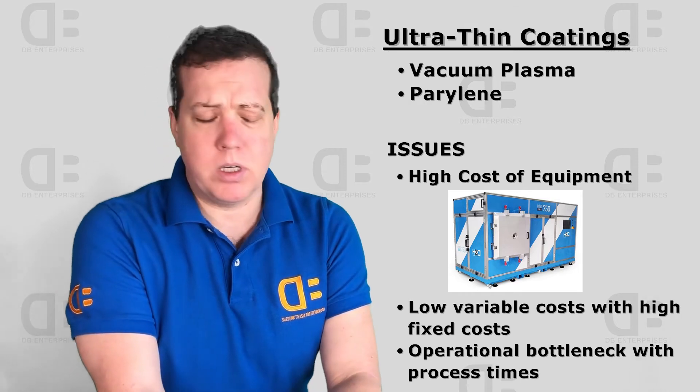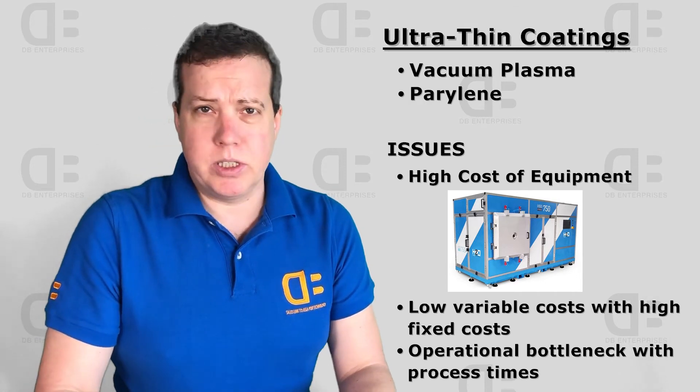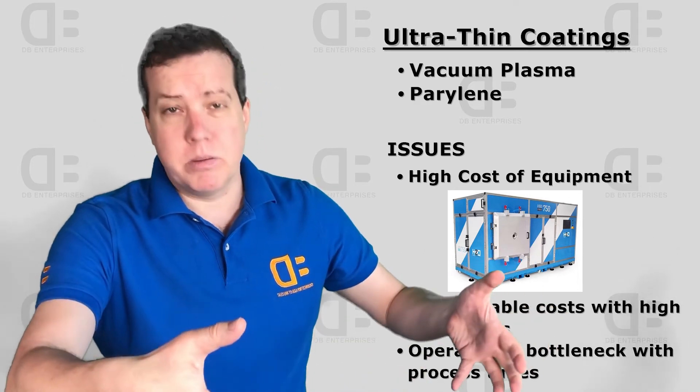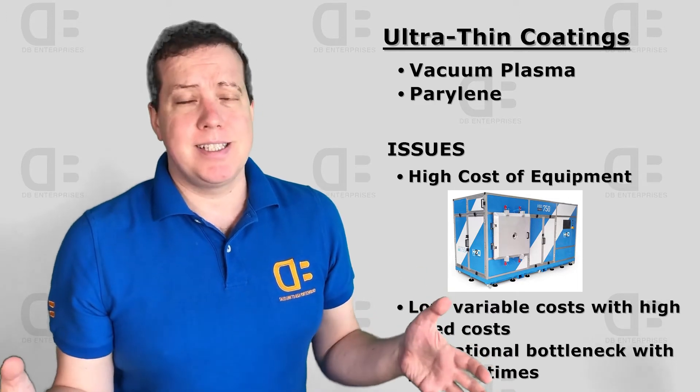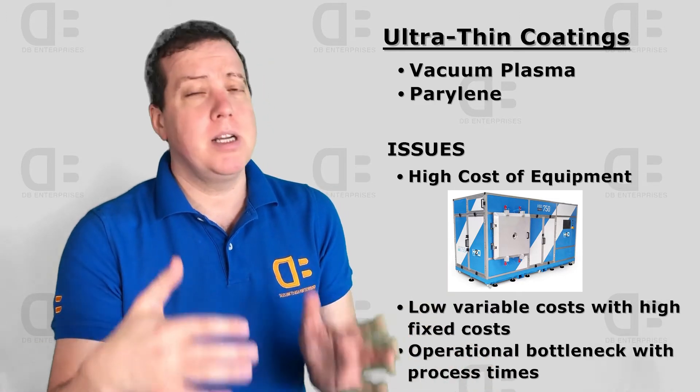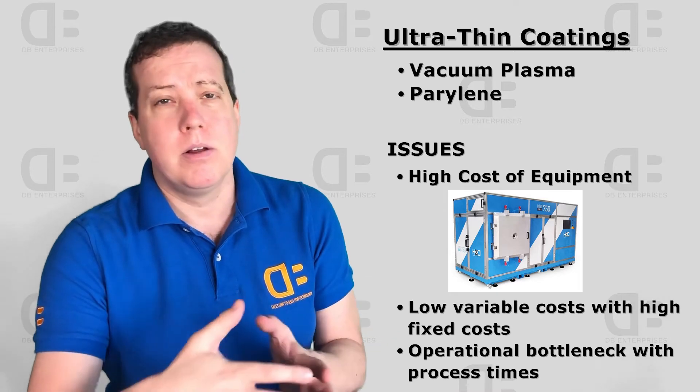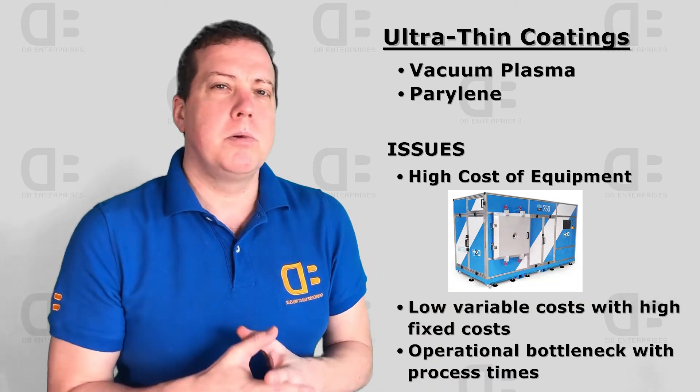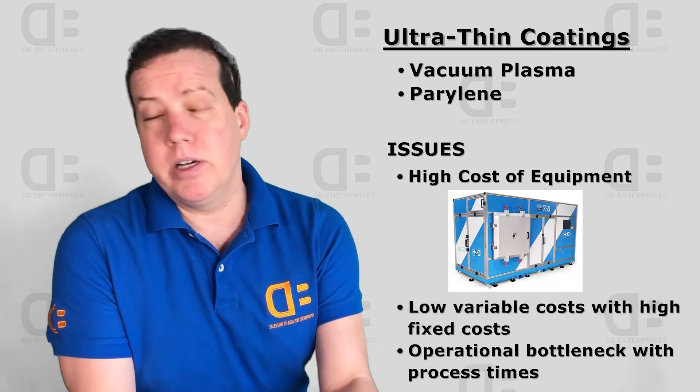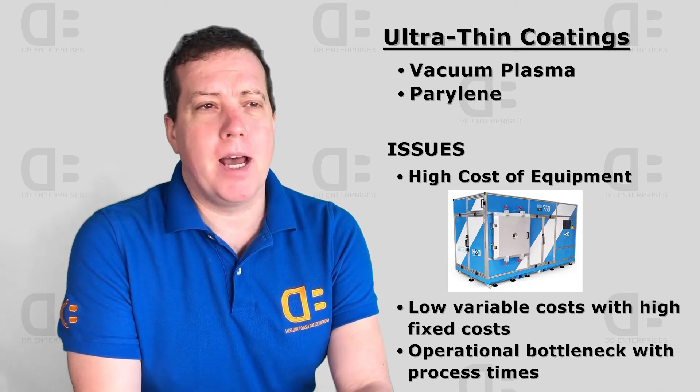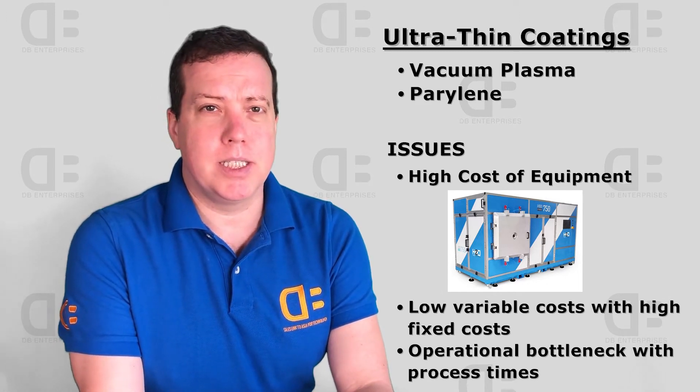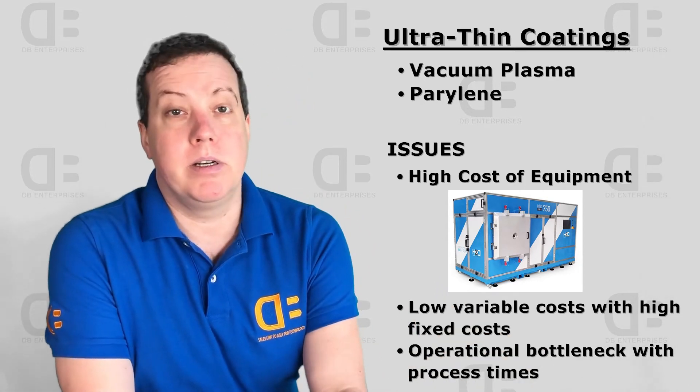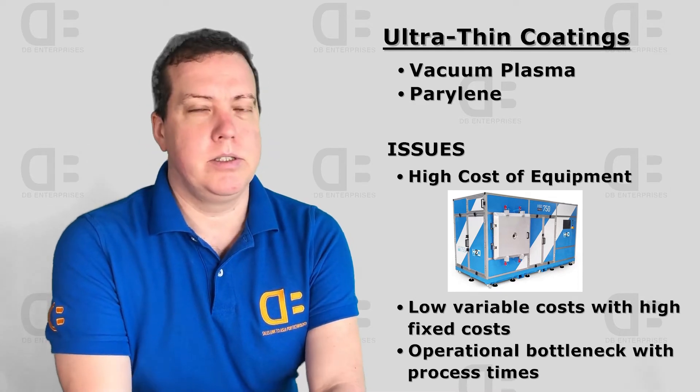While the technologies do work fairly well, there is an issue operationally in terms of it is a batch process. You load, say, 500 mobile phone motherboards into a chamber. If you want IPX7 level protection, those processes with perylene or with the plasma fluorocarbon type coatings take four to six hours to coat the board. So you can imagine a mobile brand that even does a million phones a year, you're going to have a bottleneck in production. That time operationally bogs things down. You can only afford so many machines. It becomes an operational barrier in addition to the other cost issues.